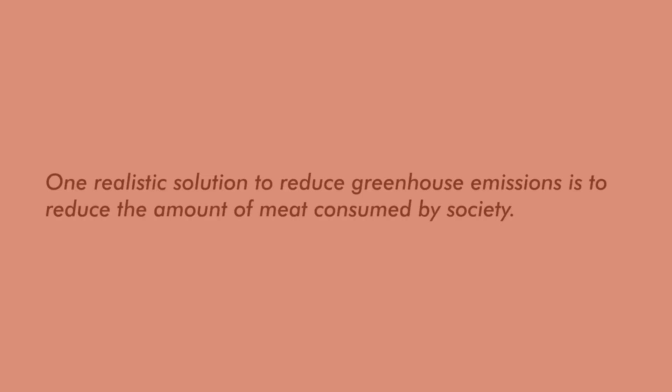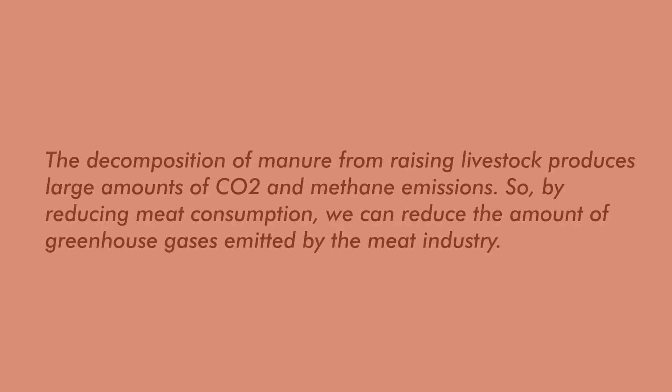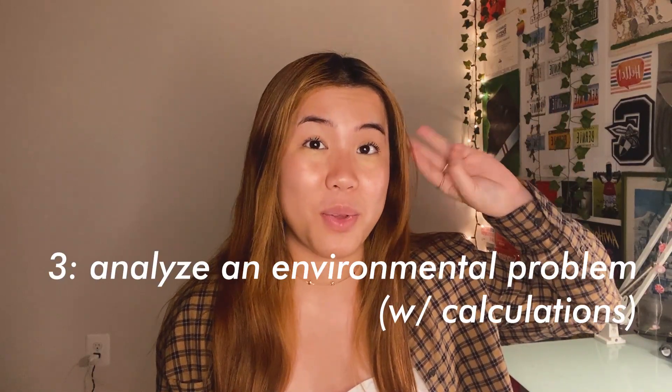If asked to propose a solution to reduce greenhouse gas emissions, for example: "One realistic solution to reduce greenhouse gas emissions is to reduce the amount of meat consumed by society." That gets the propose point. Then to justify: "The decomposition of manure from raising livestock produces large CO₂ and methane emissions, so reducing meat consumption would also reduce the greenhouse gases emitted by that industry."